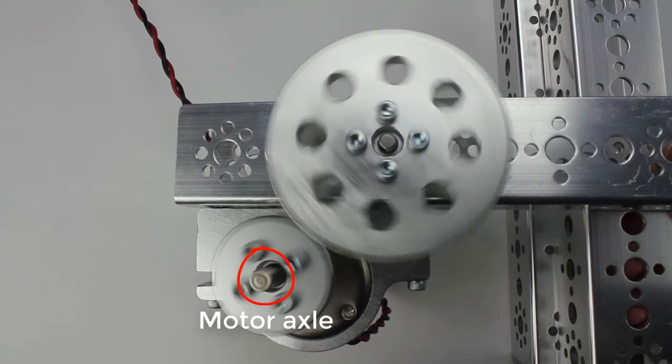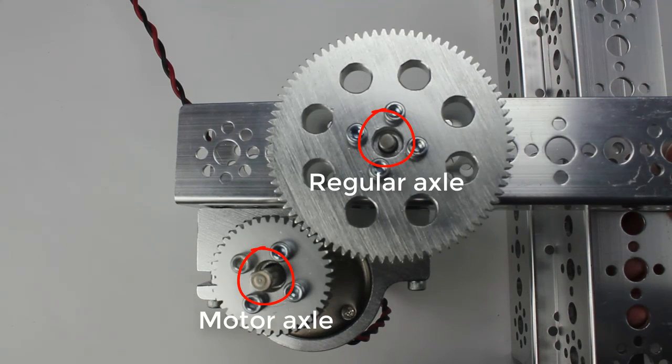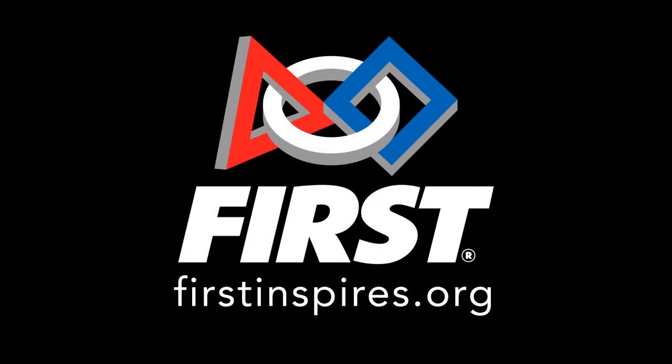The motor axle has a different diameter from other axles, so a shaft hub with a different hole size will be needed.